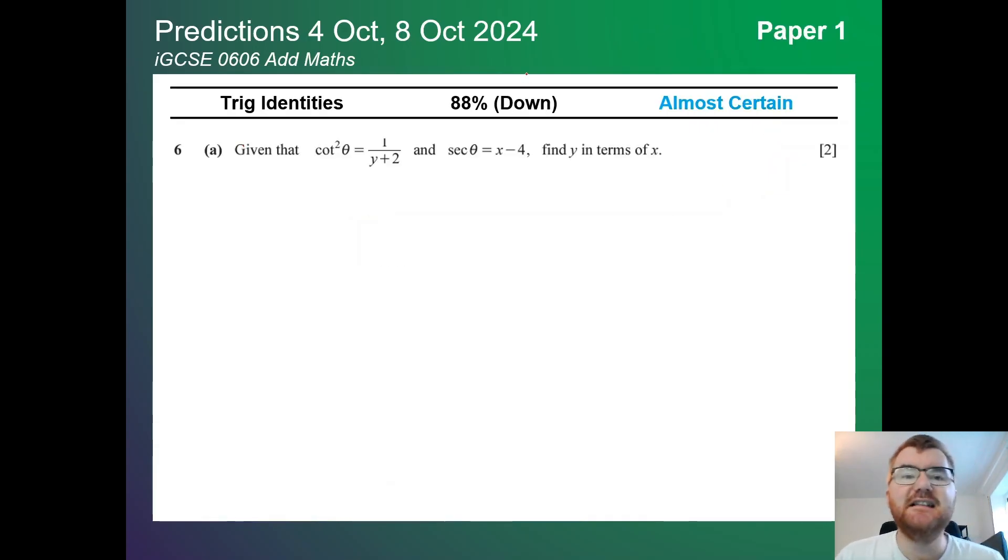On to trig identities. Slightly down here at 88% but still in that almost certain category. Notice one of the big differences between A-level maths paper 1 and the AdMaths course is you have to work with things like sec and cotangent. Make sure that you revise those and know those key identities so you can convert between them.